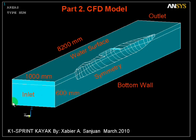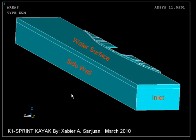The faces of this grid are made up of the inlet where the flow will enter — in this case water — the water surface, the outlet at the stern of the kayak, a wall at the bottom, a symmetry plane along half of the model, and a side wall to complete the water domain grid.